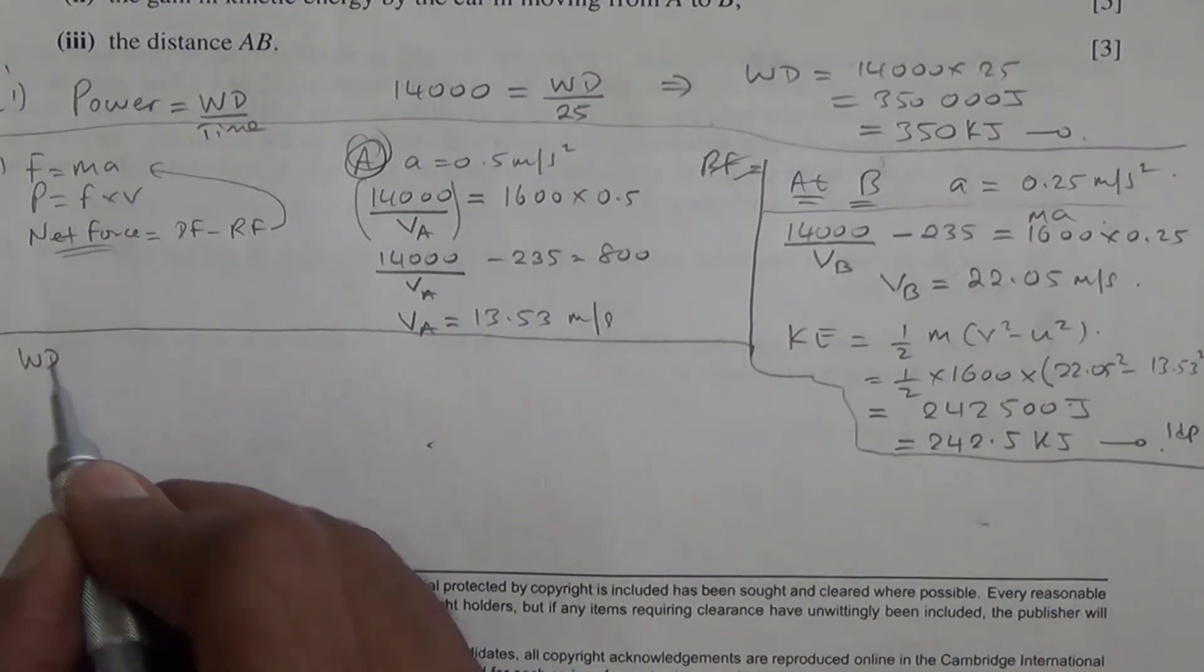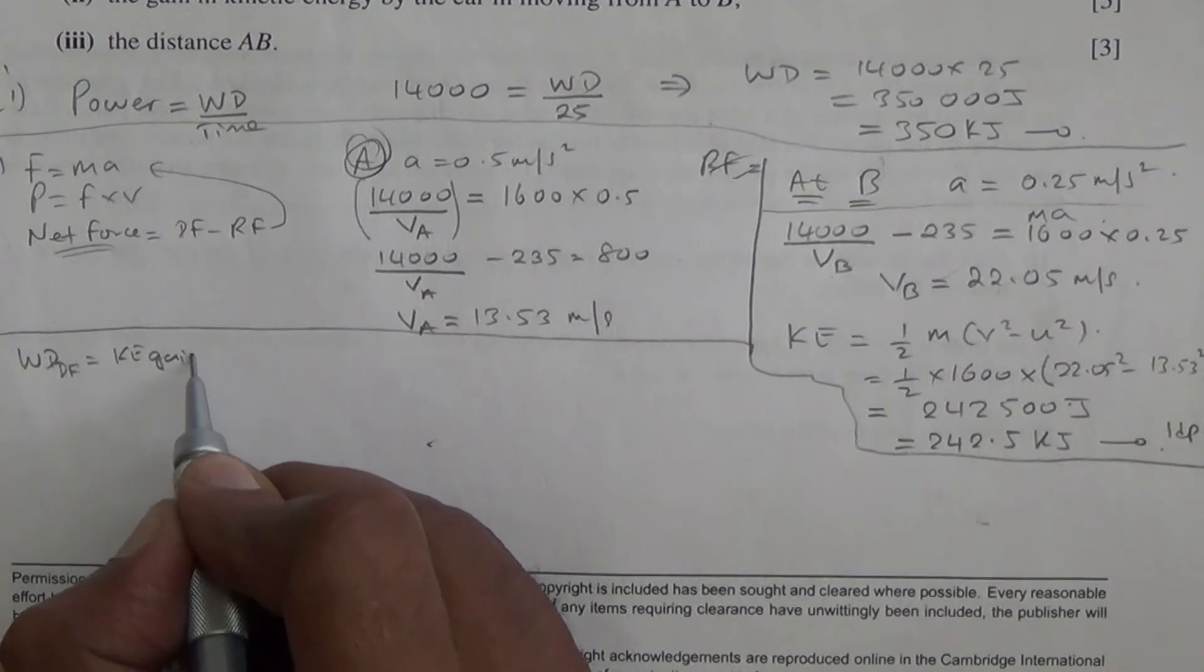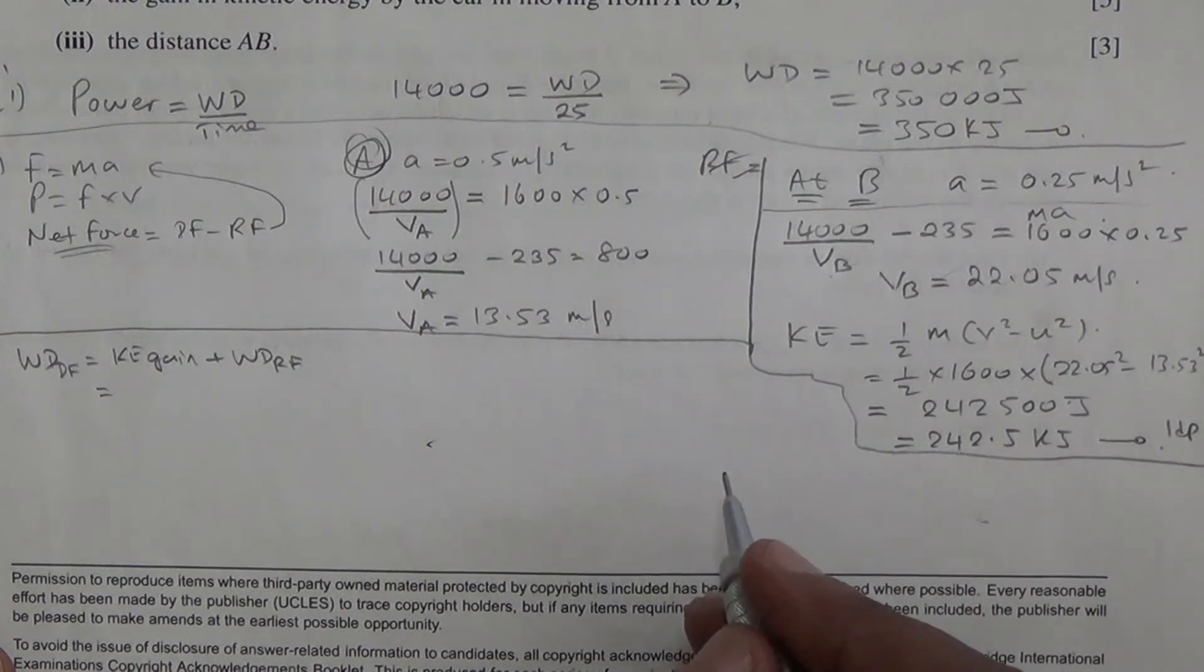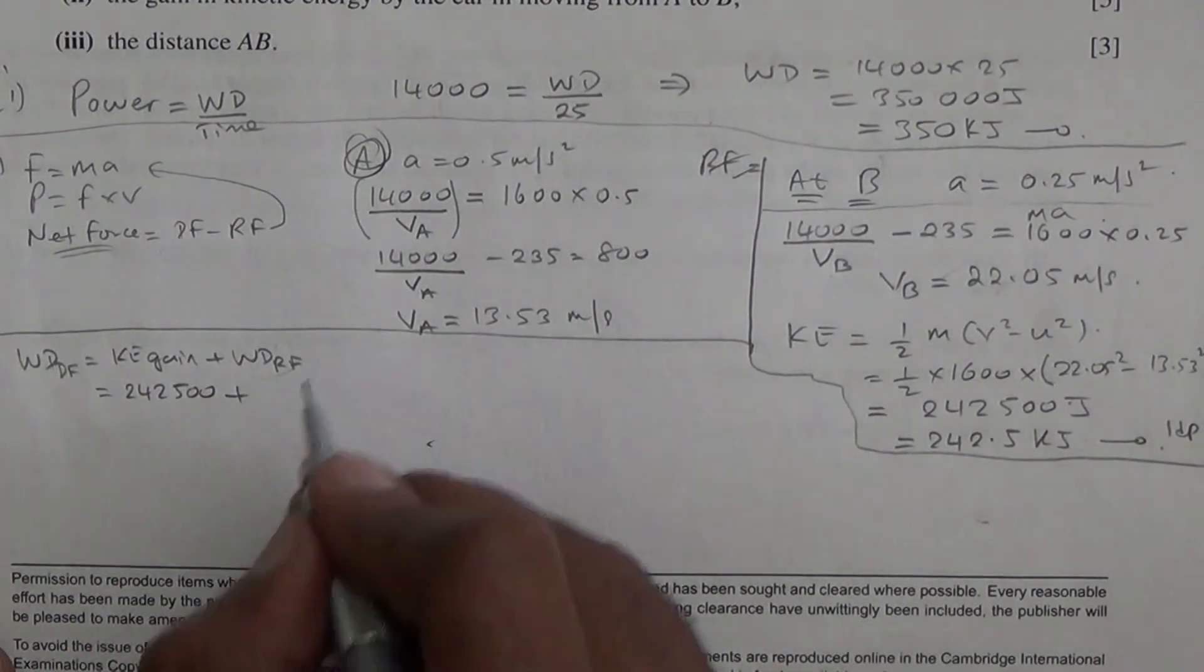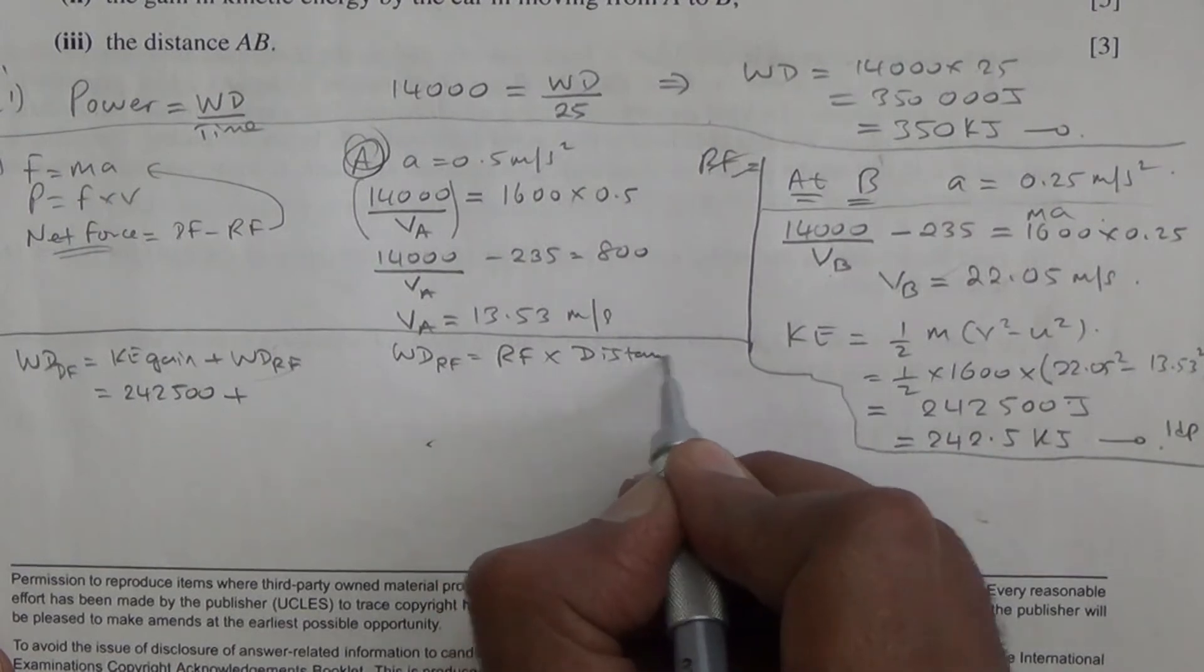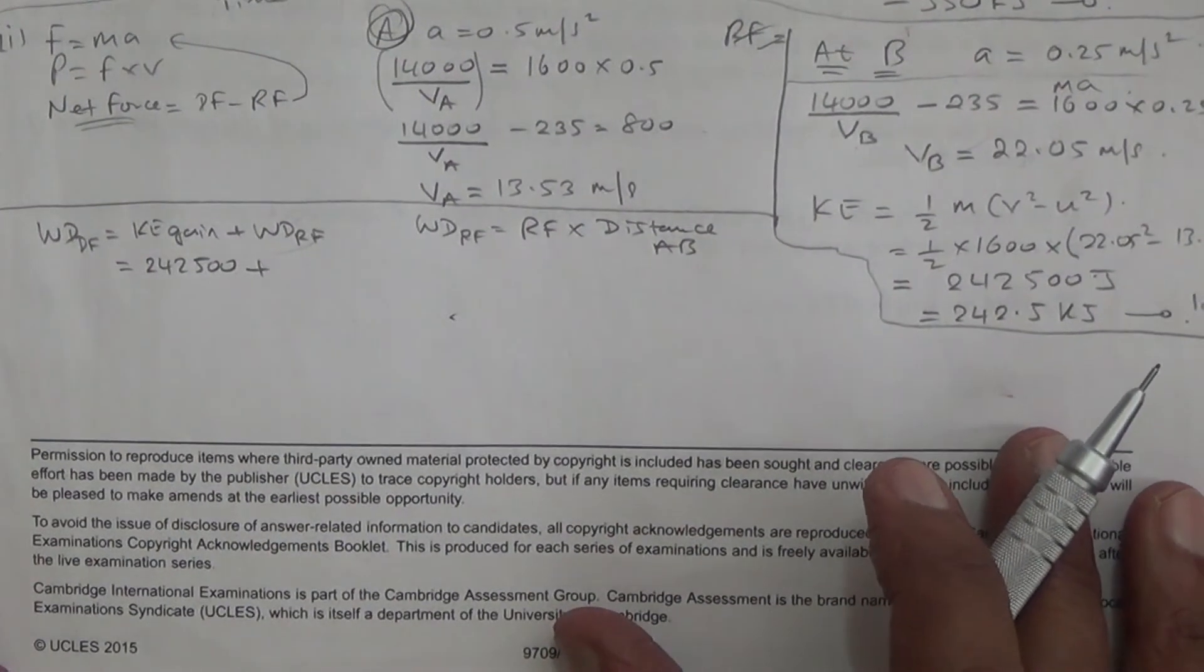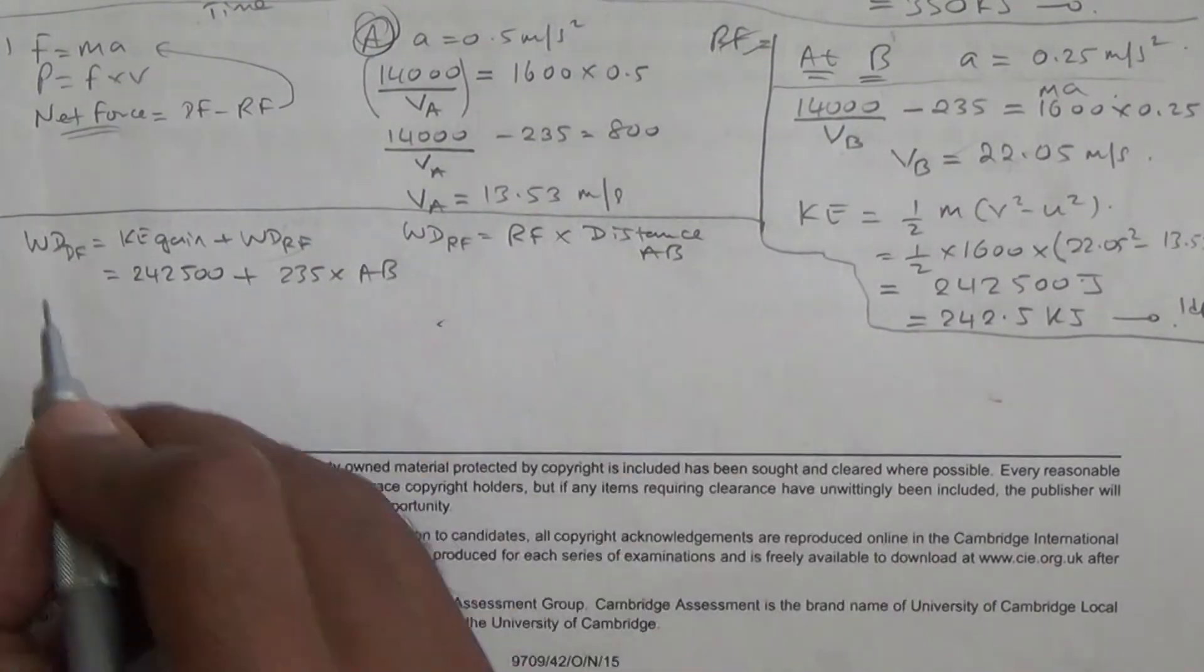What is the work done? The work done by the driving force is going to be equal to the gain in kinetic energy plus the work done against the resistive force. Now that itself, work done against the resistive force, is the resistive force times the distance. And we're looking for the distance AB. And the resistive force again is 235 as was given in the question earlier. So we're going to say 235 times the distance AB.